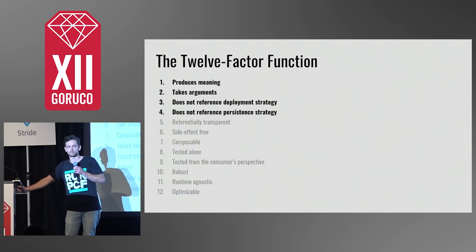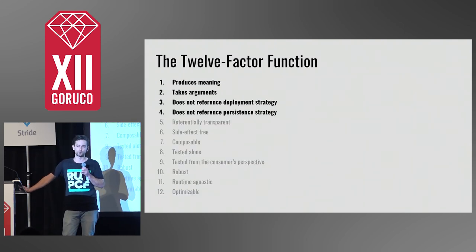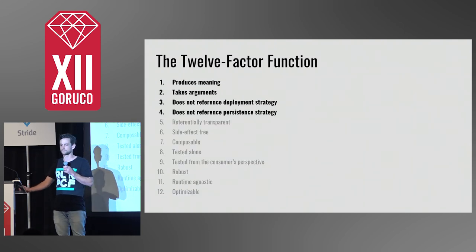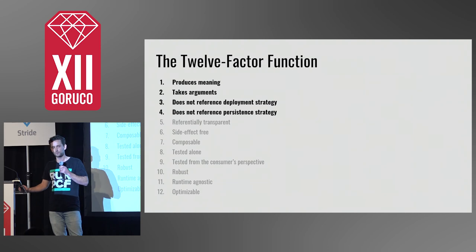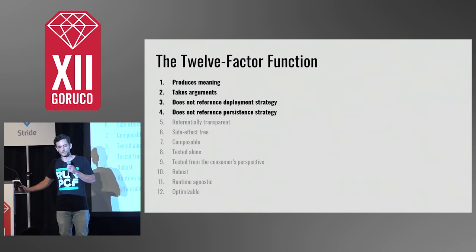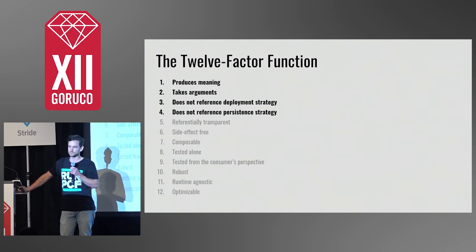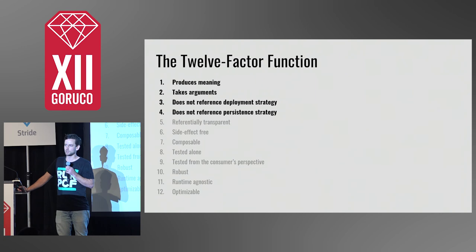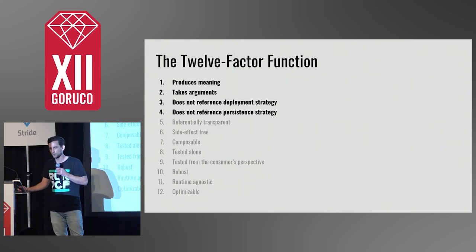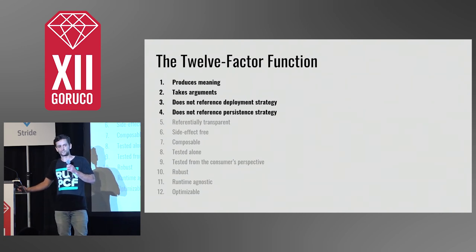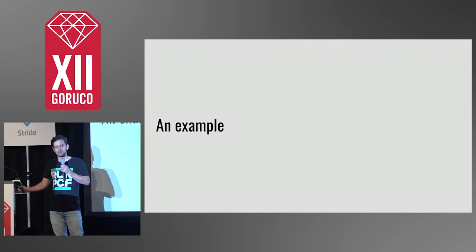And be able to change the magic with minimal impact on the meaningful bits. The last eight constraints are refinements, so we won't talk about them today. The first four are the core: the 12-factor function must produce meaning, take arguments, not reference deployment strategy, and not reference persistence strategy.